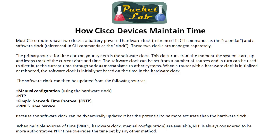One downside with the software clock is that any time IOS is interrupted — basically a reboot, a power outage, something like that — you're going to lose that clock and it will start over again. Most Cisco devices now have a separate hardware clock, analogous to the battery in your PC, that maintains time even when IOS is not up. So when IOS does restore, it synchronizes its software clock from the hardware clock, giving you more accurate time.